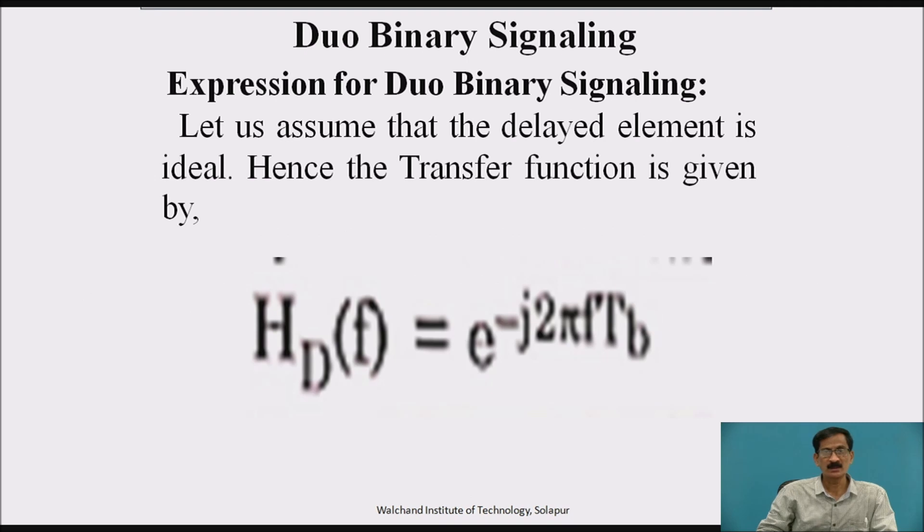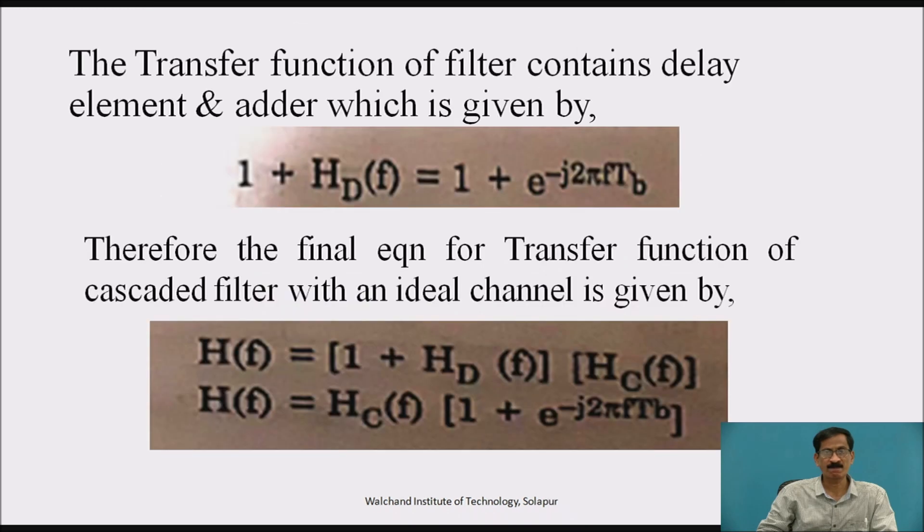Duobinary signalling expression. Let us assume that the delayed element is ideal. Hence, transfer function is given by hd of f equals e raised to minus j 2 pi f tb. The transfer function of filter contains a delay element and adder which is given by 1 plus hd of f equals 1 plus e raised to minus 2 pi f tb.